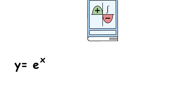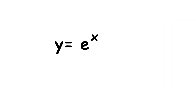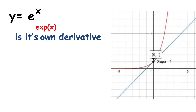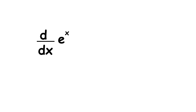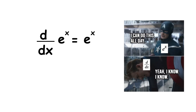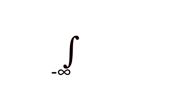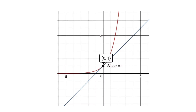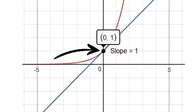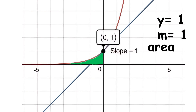In calculus, the most important exponential function is y equals e to the x power, where e is Euler's number. Also denoted exp(x), this function is its own derivative: the rate of change at each point equals the value of the function at that point, so d/dx of e to the x equals e to the x. It is also its own antiderivative — the integral from negative infinity to x of e to the t power dt equals e to the x power. This means that at any given point, the height above the x-axis, the slope of the tangent line, and the area under the curve from negative infinity to that point are all exactly the same value.